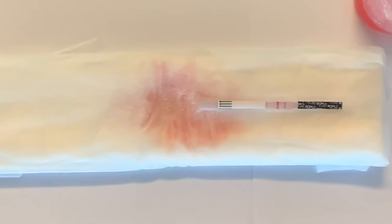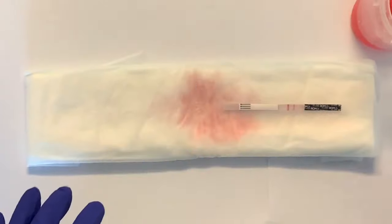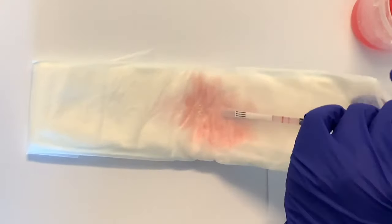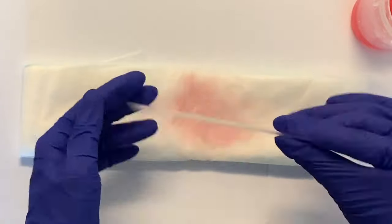If two purple bars appear, as shown here, the leakage of fluid is likely to be amniotic fluid. If only one bar appears, this means that the leakage could be urine, normal vaginal discharge, or semen.